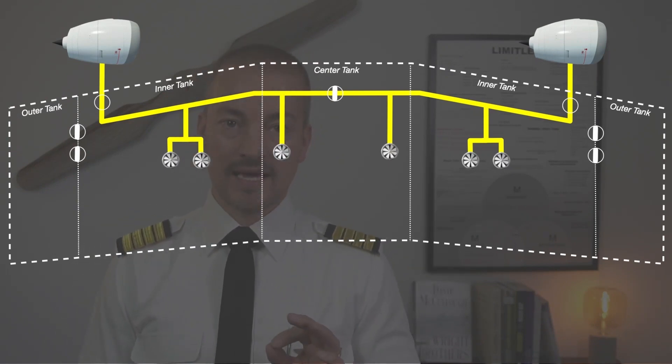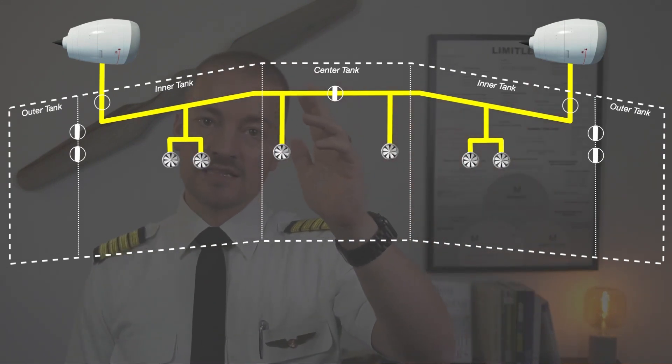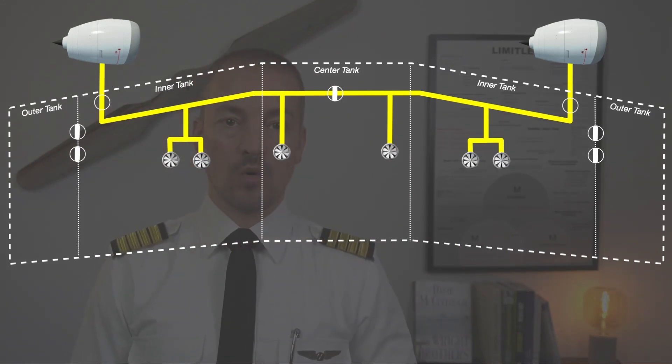Each wing tank has two fuel pumps and two fuel pumps are installed as you can see here in the center tank. The right side of the fuel system delivers fuel to engine number two and the left side delivers to engine number one.